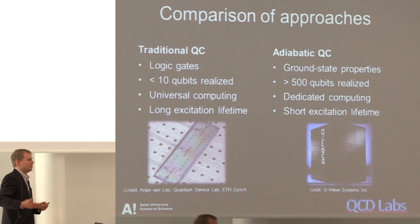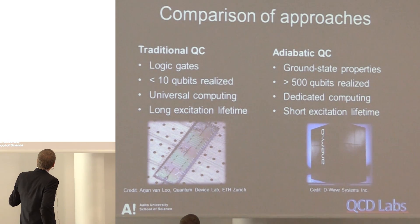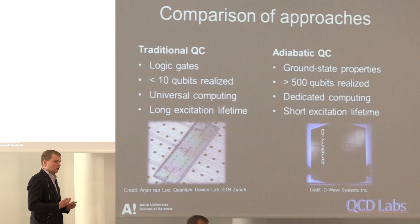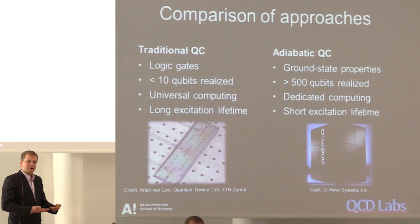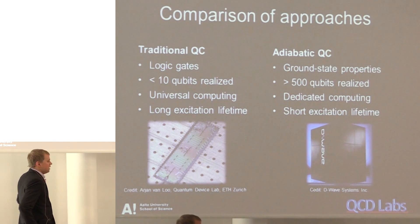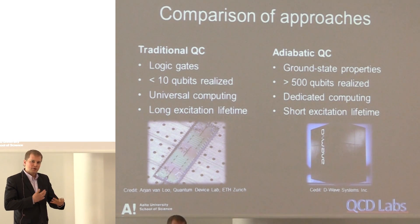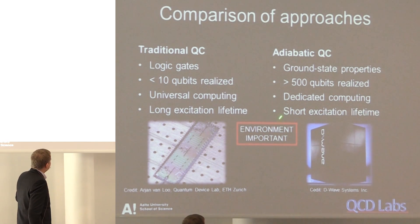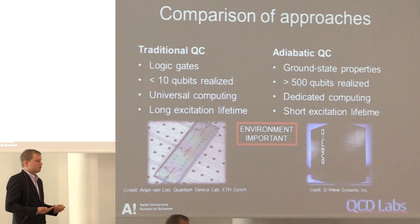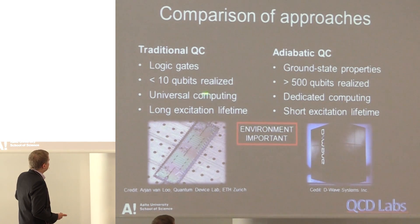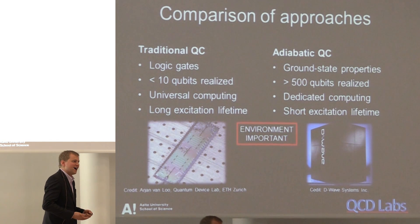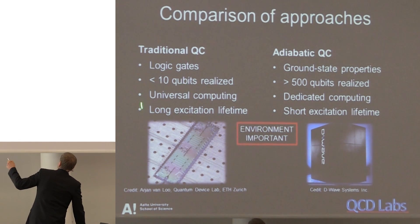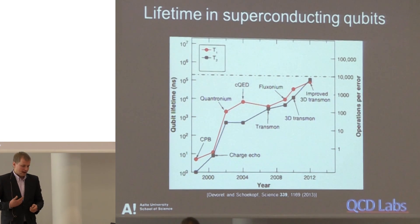You will hear more about D-Wave later, so I won't go into deep detail. Thinking about the lifetime of the qubits: in the D-Wave case you work in the ground state, so having a short excitation lifetime doesn't matter much. But in the traditional approach, you work in excited states and you want the qubits to have very long lifetimes. What is very important for both approaches is the environment. For adiabatic computing, the environment helps you stay in the ground state. For gate-based computing, people have wanted to get rid of the environment so that you never decay or suffer decoherence.